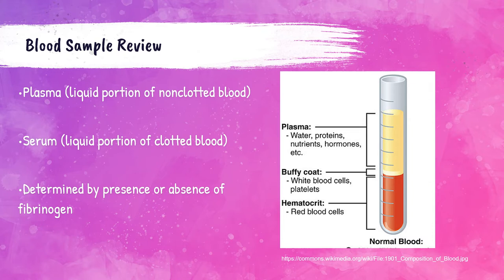To review: plasma is the liquid portion of an anticoagulated tube — there is no clot. An example would be a centrifuged light green tube, which you don't need to wait to clot before spinning. Serum is the liquid portion of a clotted sample — for example, a gold top tube, which you must wait to clot before centrifuging. Serum lacks fibrinogen because the fibrinogen has been used to form the clot.